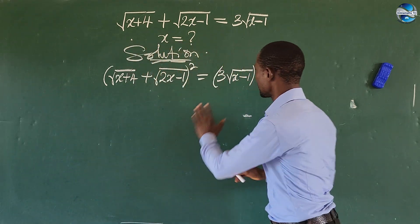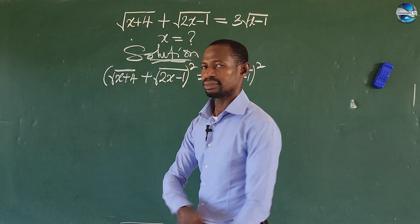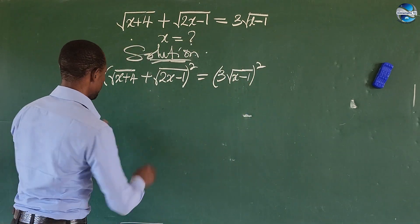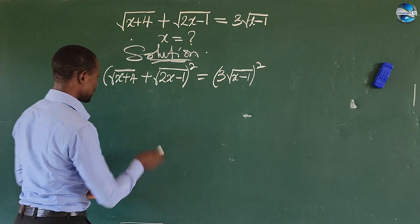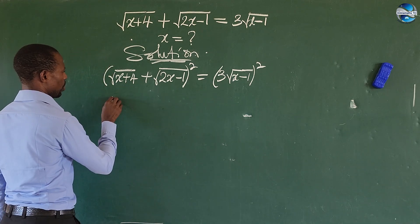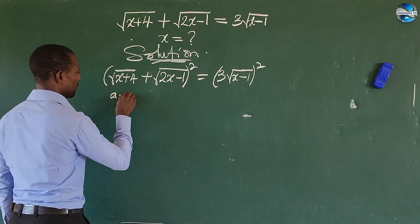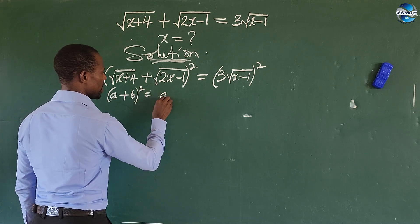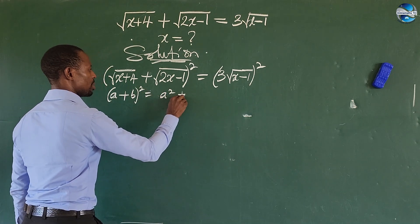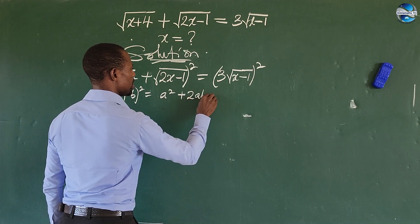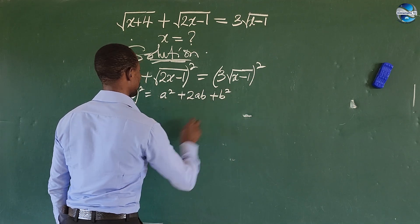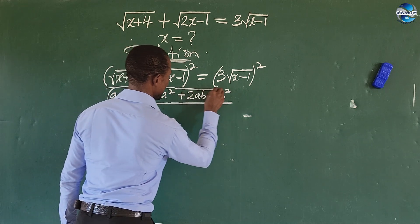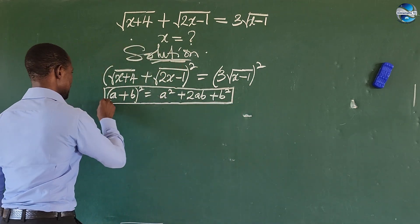Now we don't have a problem with the right side of the equation — we just have to do some simple simplification on the left. We recall the algebraic identity: (a + b)² equals a² plus 2ab plus b². We know this, and we're going to apply this identity here.